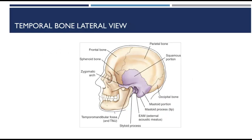The zygomatic process is an arch that extends anteriorly from the squamous portion of the temporal bone, which meets the temporal process of the zygomatic bone to form the easily palpated zygomatic arch.